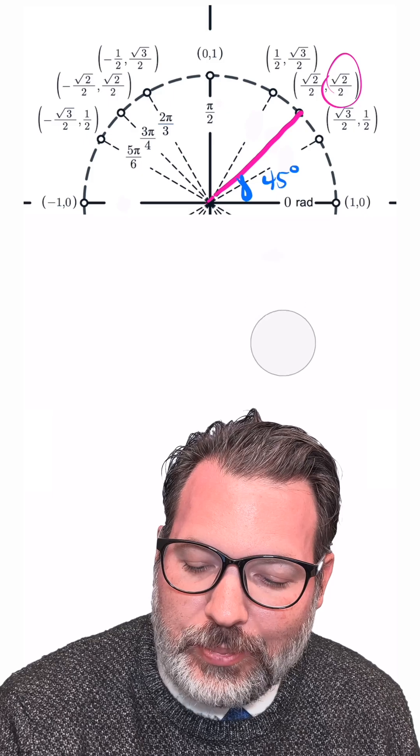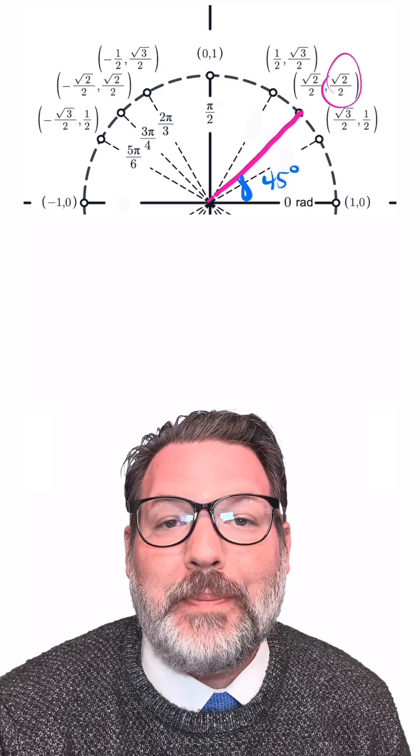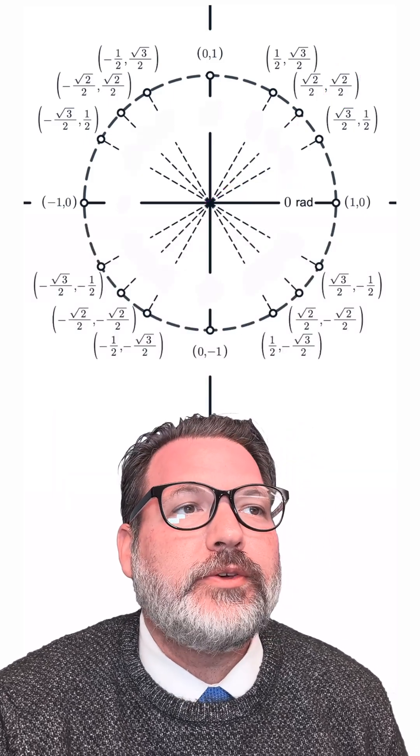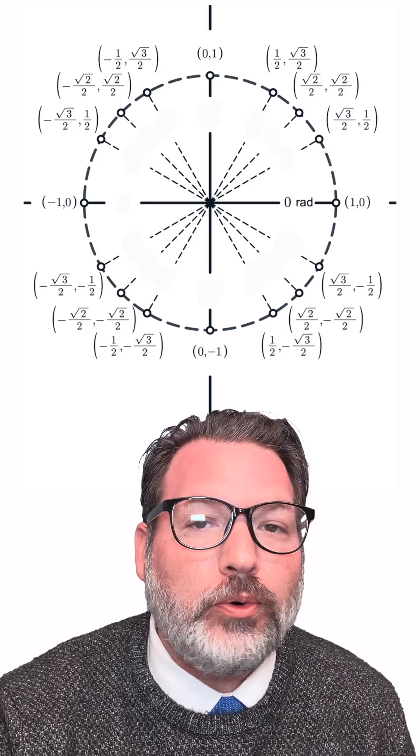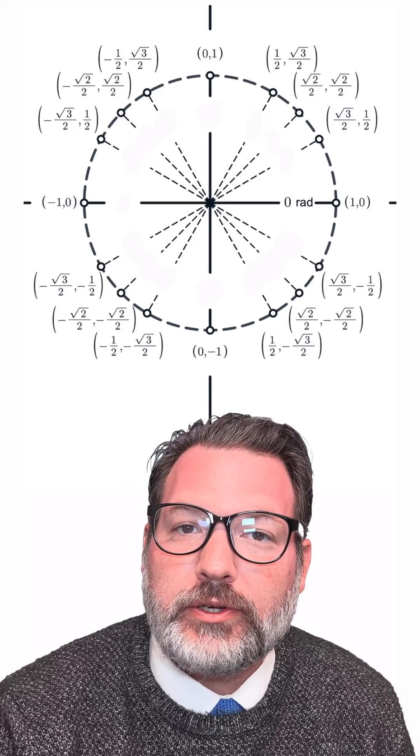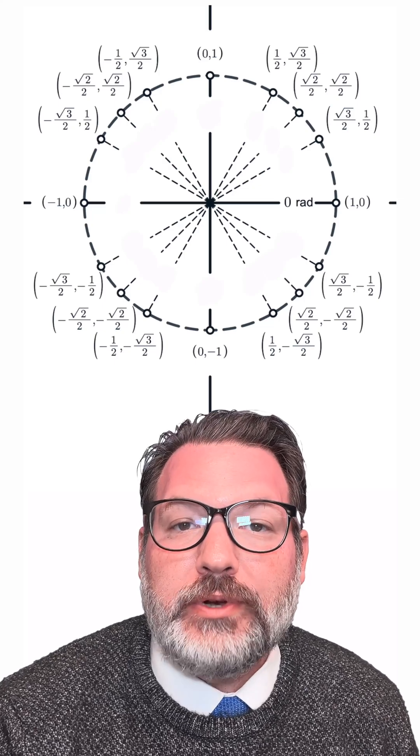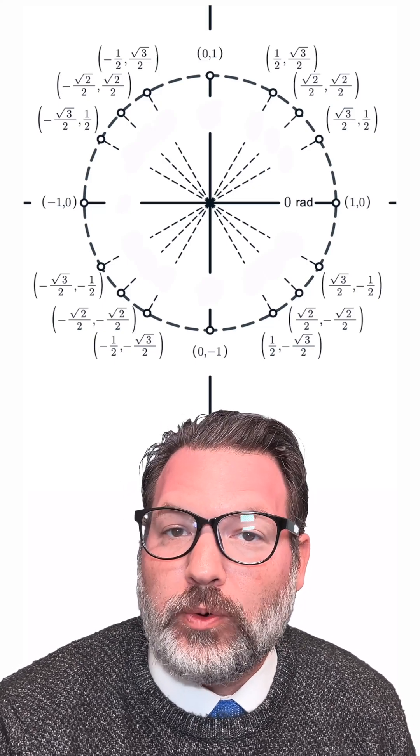And so what we have to do to compensate for that is called a domain restriction. If we're going to use this arc sine or inverse sine function, we need to make sure that we're only using it on a region of the unit circle where our y-coordinates are unique, where none of them get used more than once.